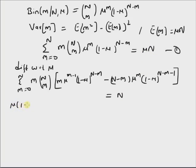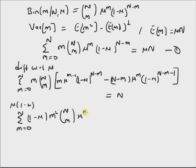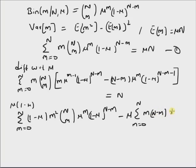Now multiplying with mu times 1 minus mu on both sides, we get summation m equal to 0 to n of: the first part with (1 minus mu) times m squared times n choose m times mu to the power m times 1 minus mu to the power n minus m, minus the second term mu to the power m times 1 minus mu to the power n minus m, and the term on the other side is mu times 1 minus mu times n.